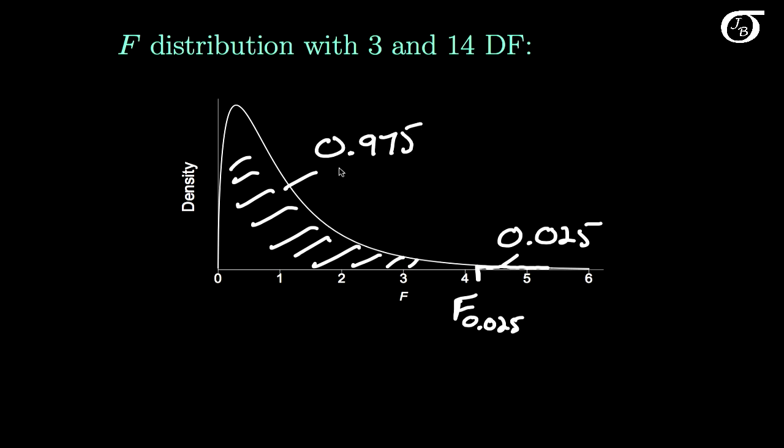We're going to have to tell R to give us the F value that has this area to the left, or in other words, ask R for the 97.5th percentile of this F distribution.